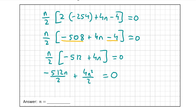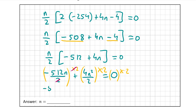The first thing to do here is to get rid of the fractions. To do that, we multiply by the lowest common denominator. As both fractions have the same denominator of 2, we multiply every term by 2 — even the 0 on the right, though 0 by 2 is still 0. So minus 512n over 2 multiplied by 2: whenever you multiply a fraction by its denominator, you're left with just the numerator, so that gives minus 512n. The same applies for 4n squared over 2 multiplied by 2, leaving 4n squared. So we have minus 512n plus 4n squared equals 0.